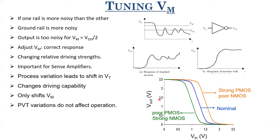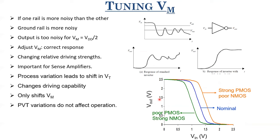Now let us discuss the input high voltage VIH and input low voltage VIL — other important points on the VTC. VIH and VIL are defined as the two input voltages where dVout/dVin equals minus one. There are two such points on the VTC; one is VIH and the other is VIL. Computing these directly from dVout/dVin = -1 becomes quite involved.